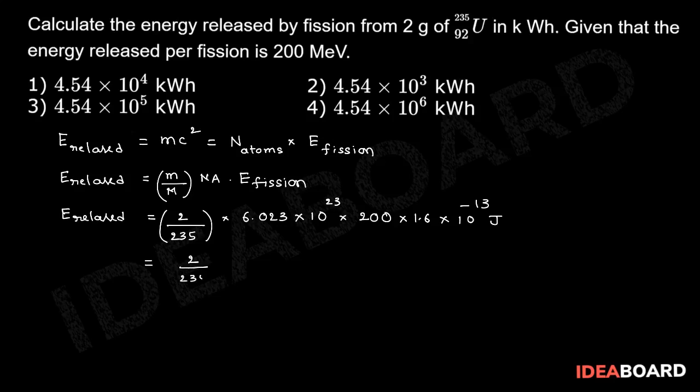So 2 by 235 into 6.023 into 10 power 23 into 3.2 into 10 power minus 11 divided by 3.6 into 10 power 6.